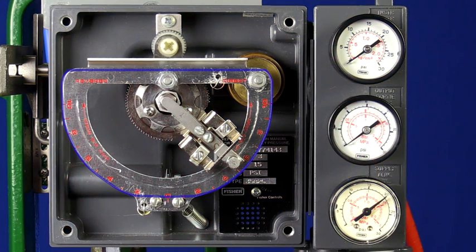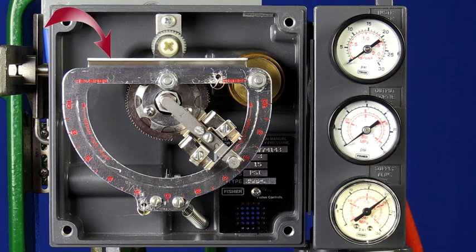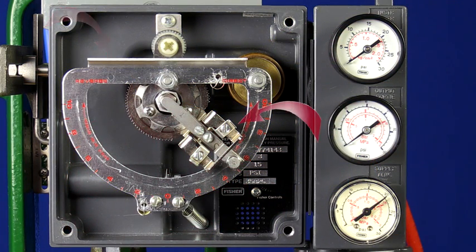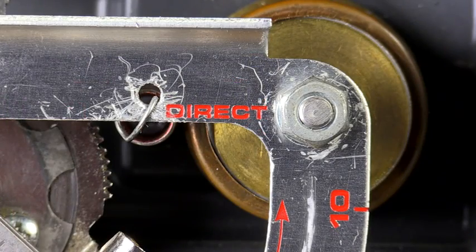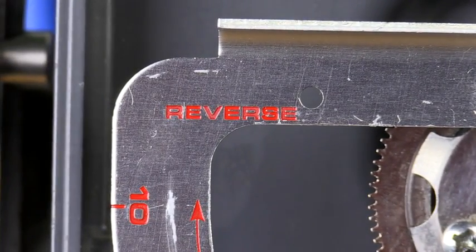So let's first identify the components of the positioner that we'll be working with. The D-shaped beam here is the summing beam and is the component this flapper assembly moves around on. Notice the summing beam is labeled direct over here and reverse over here.